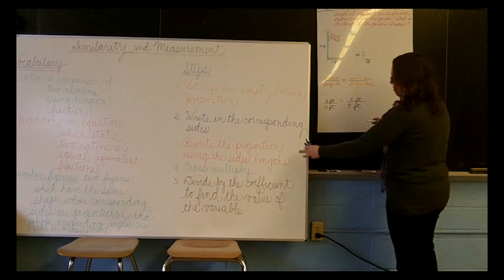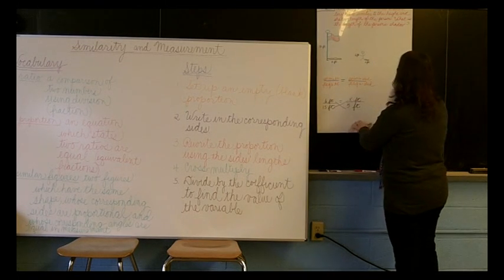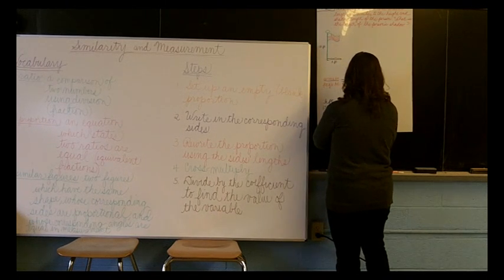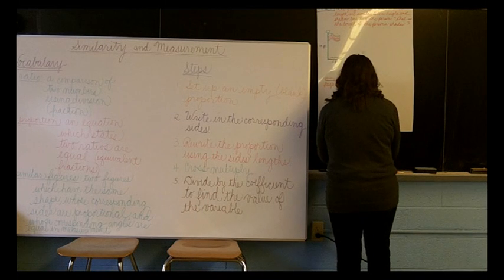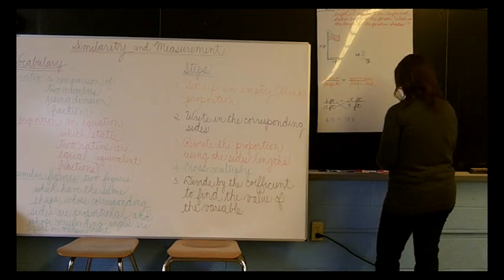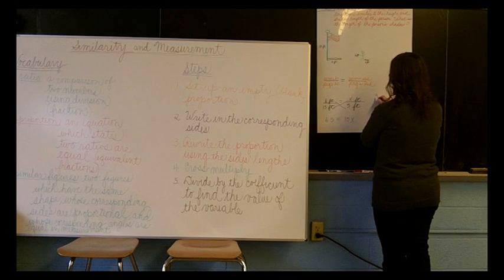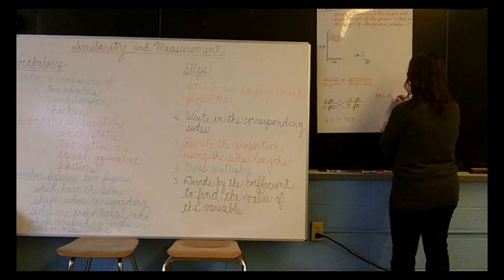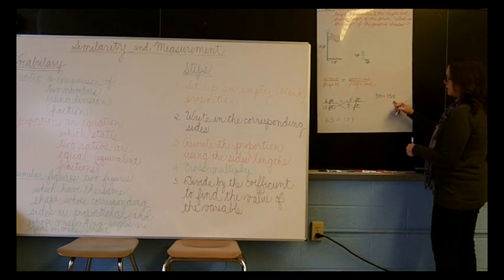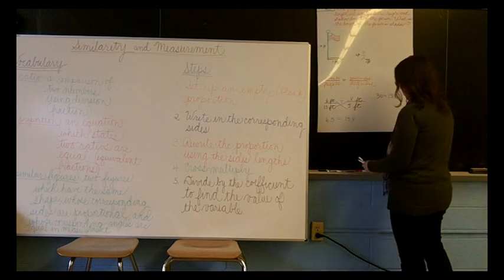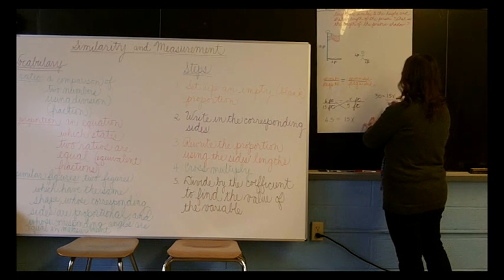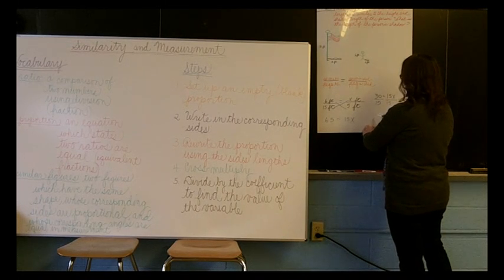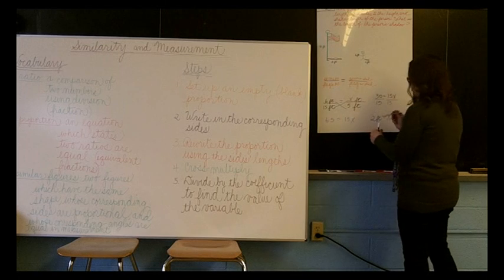If we follow our steps, we cross-multiply next, so that means we have 6 times 5 equals 15 times x. 6 times 5 is 30, and that equals 15x. To get x by itself, we need to divide by the coefficient. So we'll divide both sides by 15, and when we do that, we find that the person's shadow is 2 feet long.